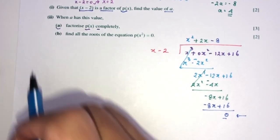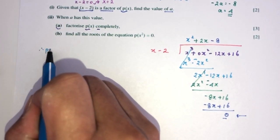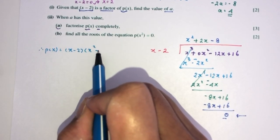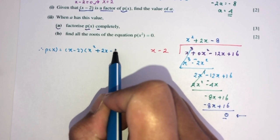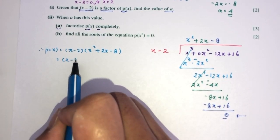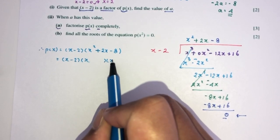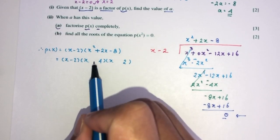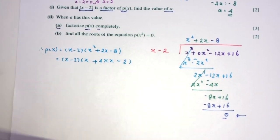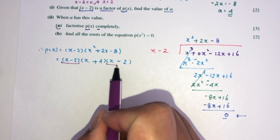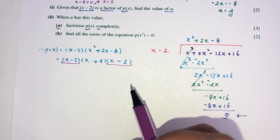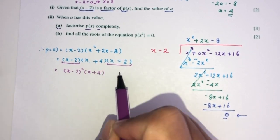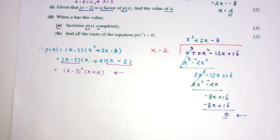In this case, we know p of x can be written as x minus 2 times the quotient, which is this one right here. Can we factorize further? Yes, we can. That will be x times x. 8 is 4 times 2. To get plus 2x, I have to have plus 4 minus 2. We realize, you can see this and this are the same. So we can combine them. You will have x minus 2 squared times x squared plus 4. This is the complete factorization of p of x for question part A.